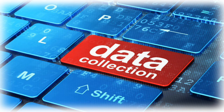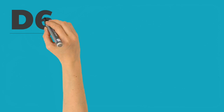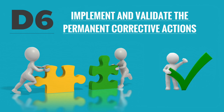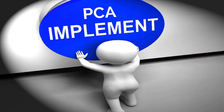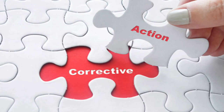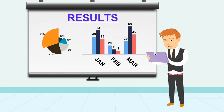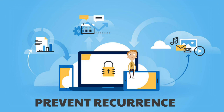If data collection is not done properly, the actions identified will not yield any result. The next important step is D6 — implement and validate the permanent corrective actions. After PCAs are identified and implemented, the interim containment action has to be removed. Once the permanent corrective action is implemented, the results have to be validated.